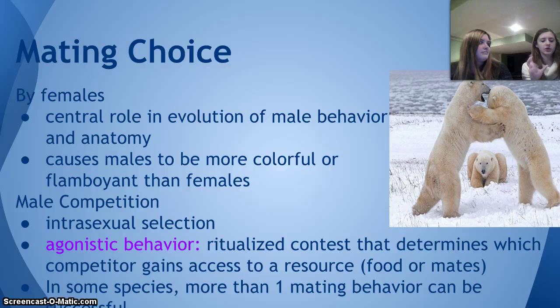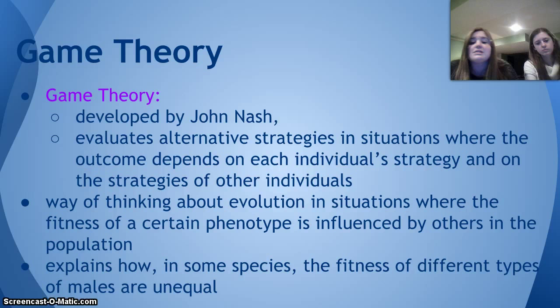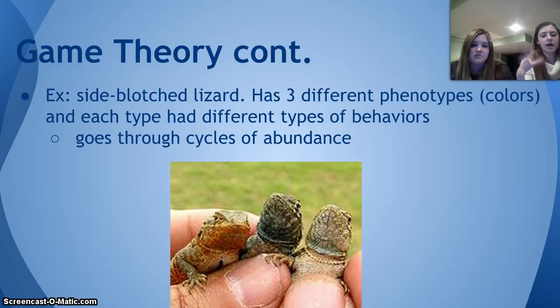Game theory was developed by John Nash, and it evaluates alternative strategies in situations where the outcome depends on each individual's strategy and on the strategies of others in the population. It explains how the fitness of different types of males can be unequal. For example, the side-blotched lizard comes in three colors — red, blue, and yellow. Red ones are aggressive and hold large territories, which allows yellow sly males to sneak in and mate with females. Blue males are less aggressive. But then yellow beats out red, blue beats out yellow, and red beats out blue — it's a constant cycle.